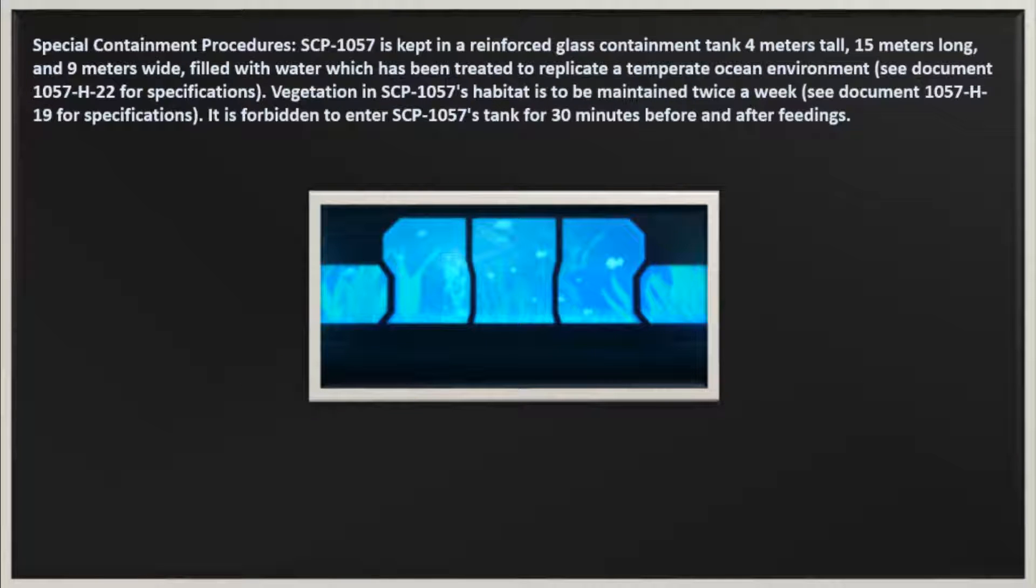Special Containment Procedures: SCP-1057 is kept in a reinforced glass containment tank 4 meters tall, 15 meters long, and 9 meters wide, filled with water which has been treated to replicate a temperate ocean environment. See Document 1057-H22 for specifications.